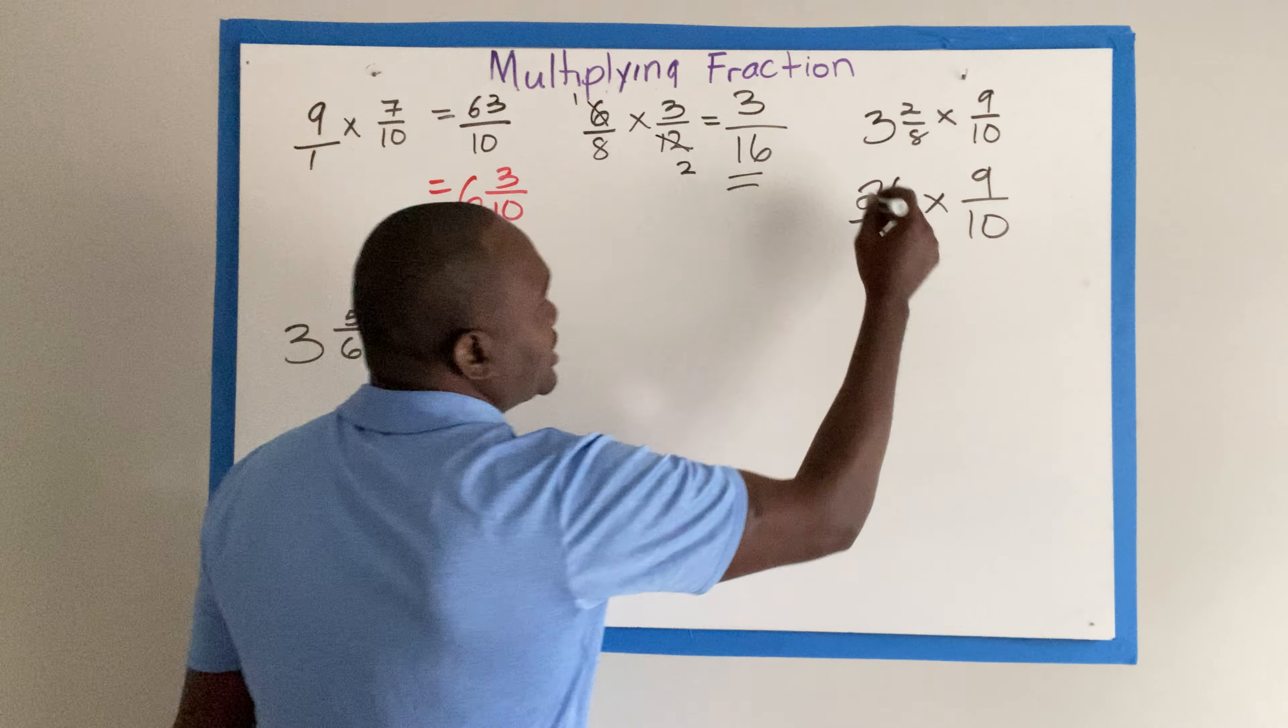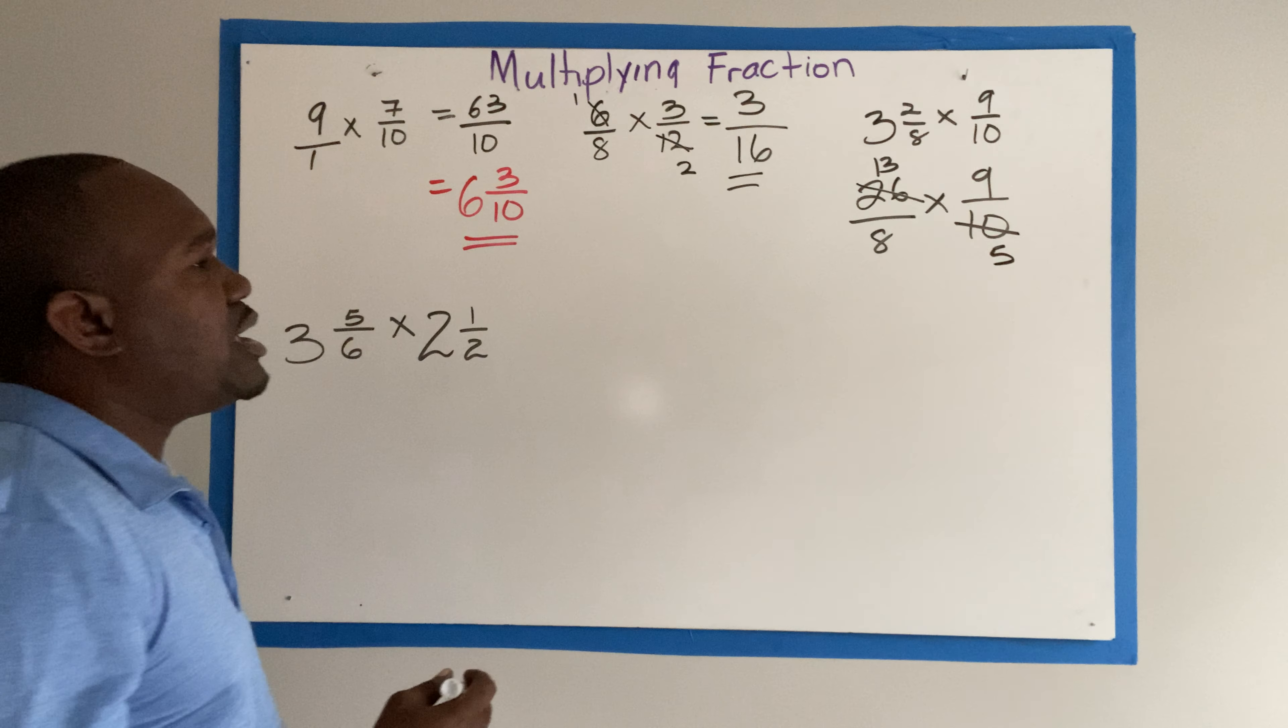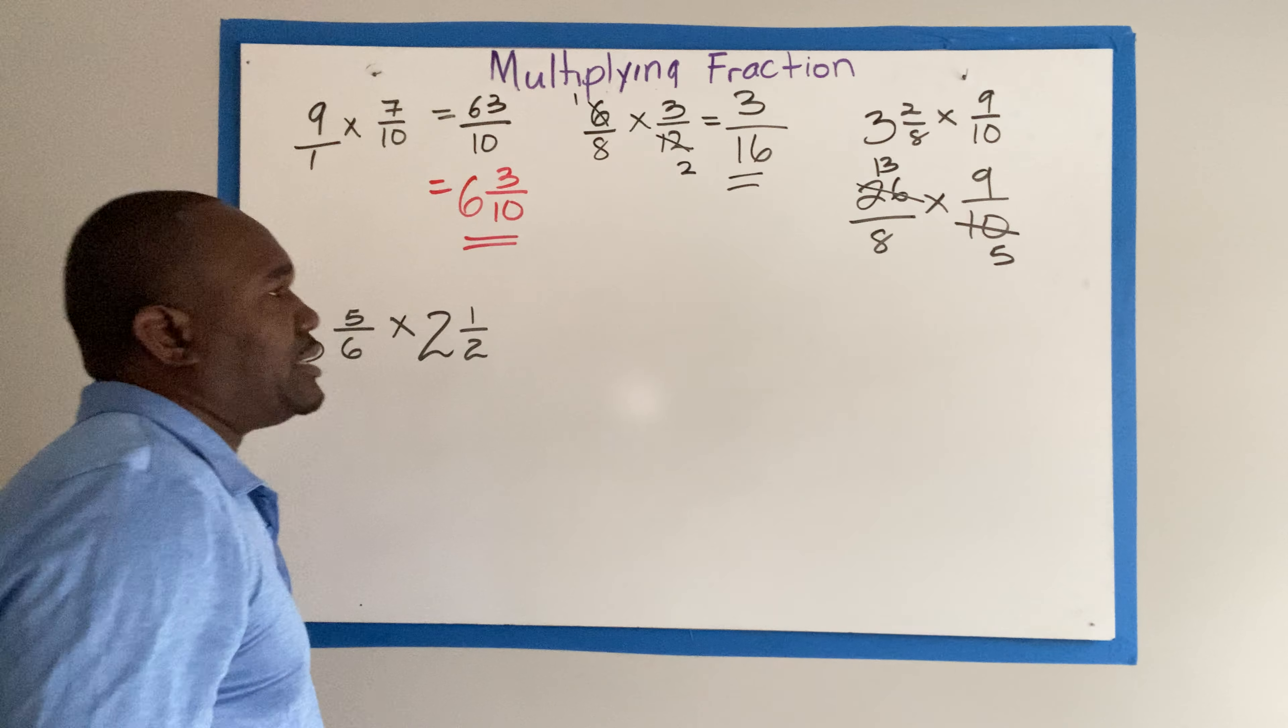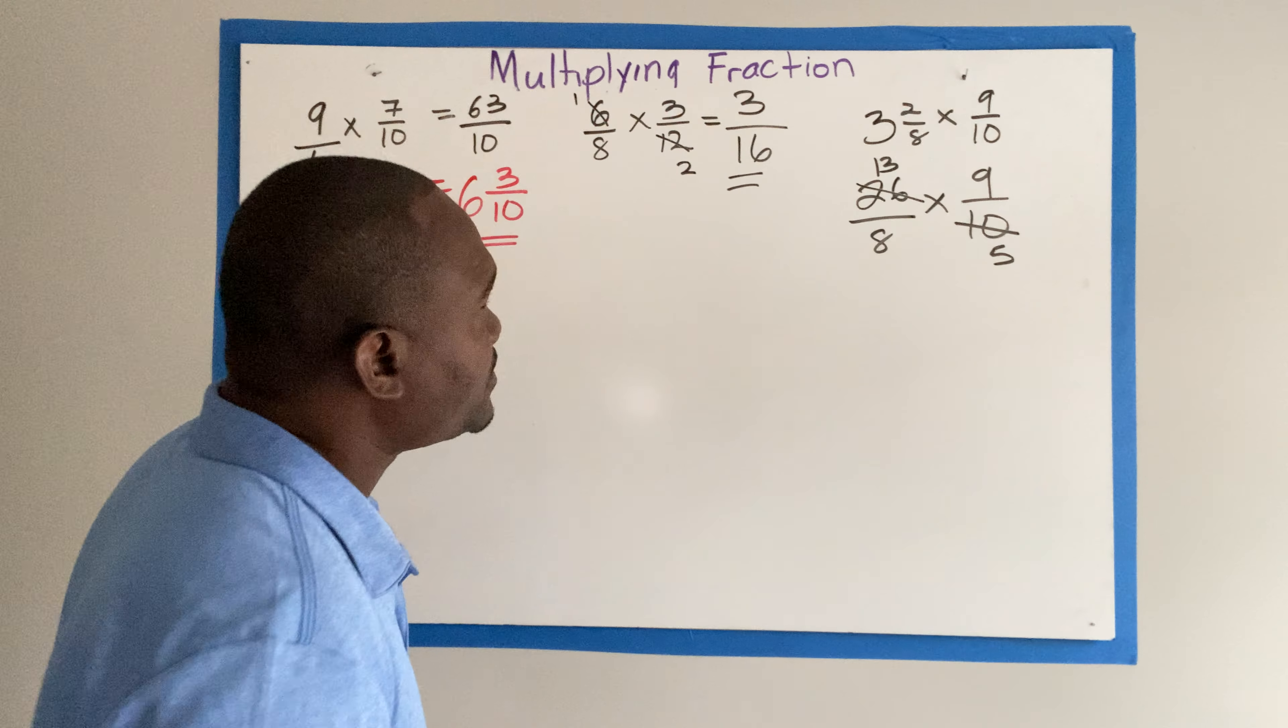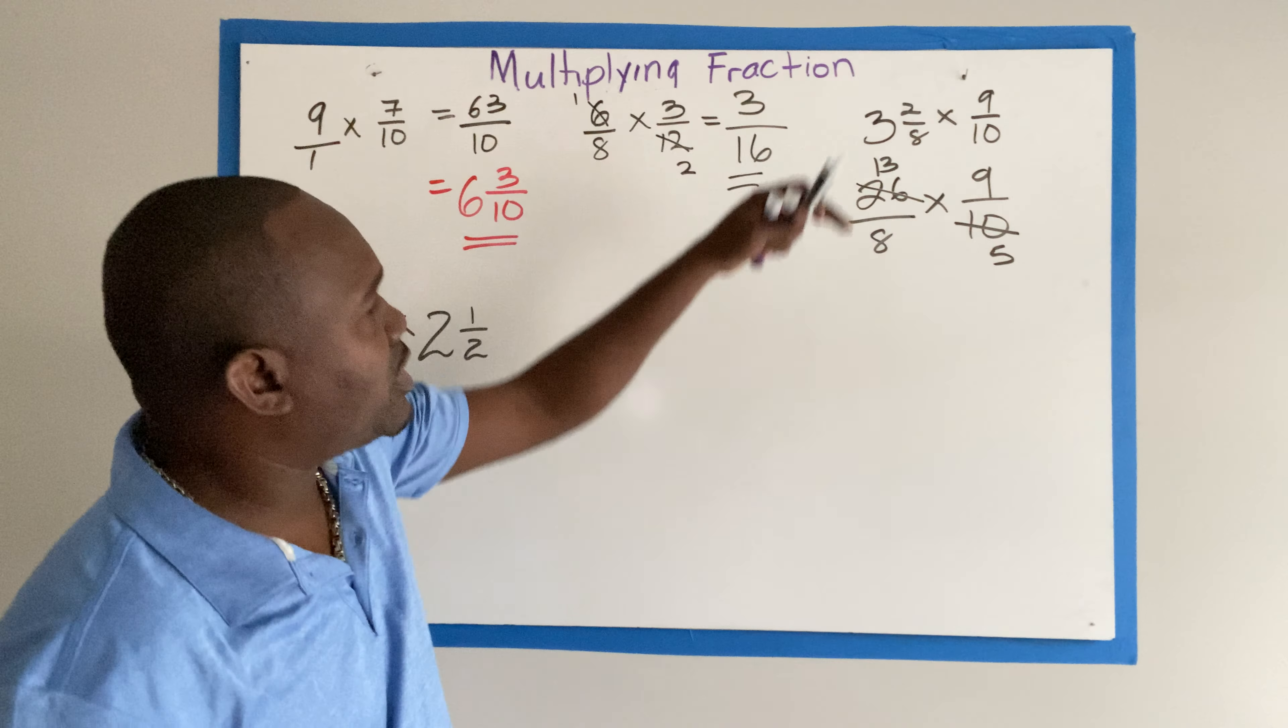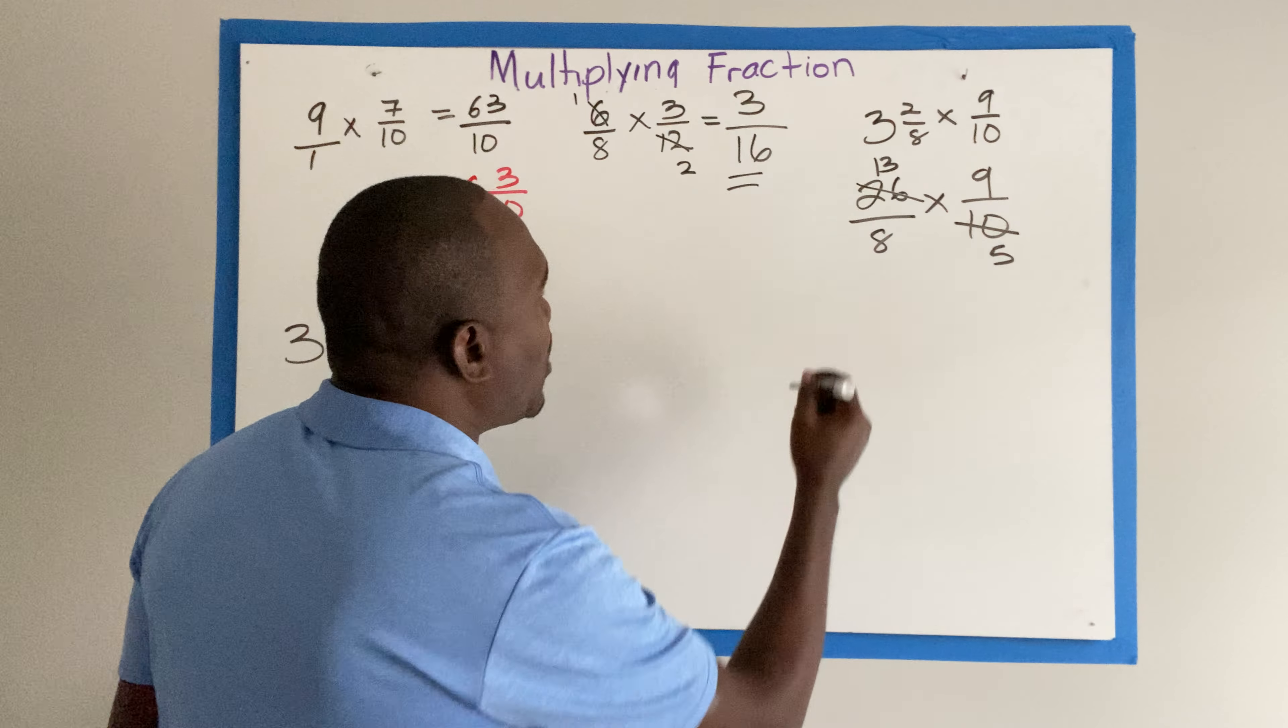We can cancel. 2 into 26 goes 13. 2 into 10 goes 5. Then we multiply across. So 13 times 9. Now for mental calculation, we just add 1 to that and make it 10. So 10 times 13 will give us 130. Then we subtract 13. We get 117.